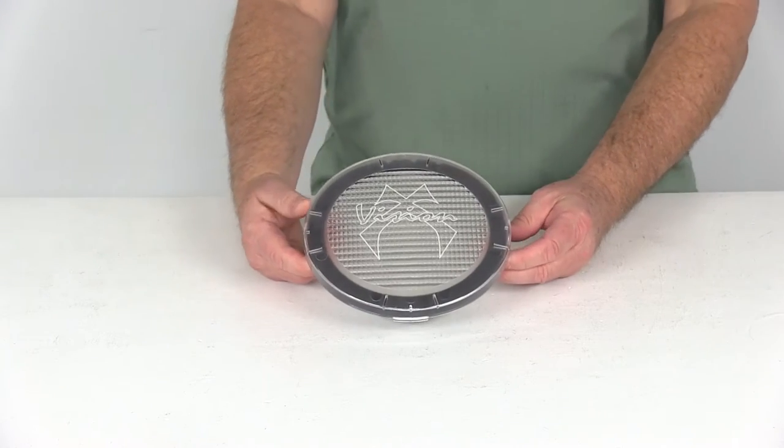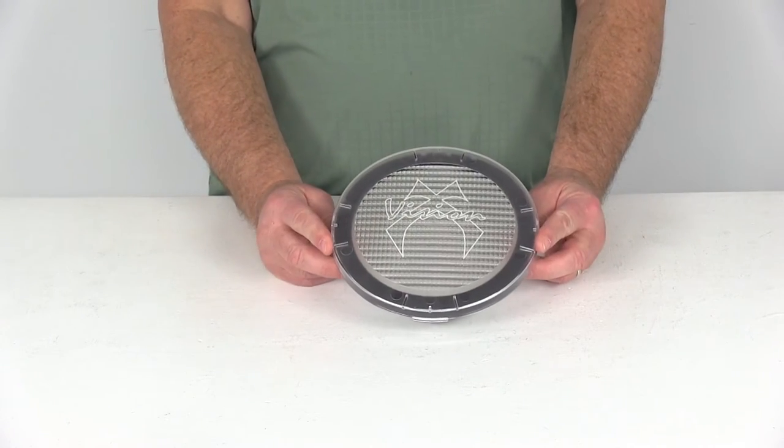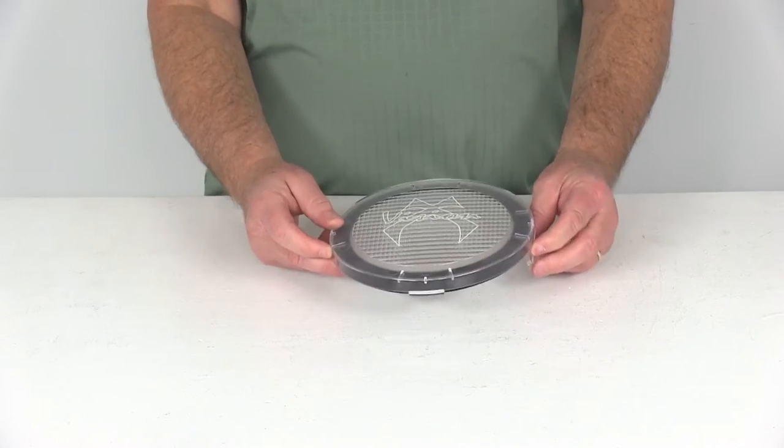The specs on this: the quantity for this part number is one light cover. The diameter is 6 and 3 quarter inches. It comes with a one year warranty.